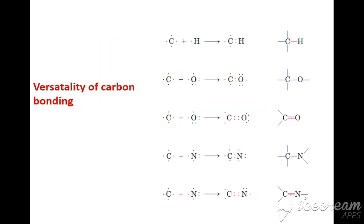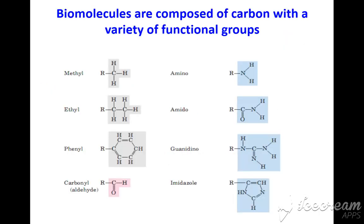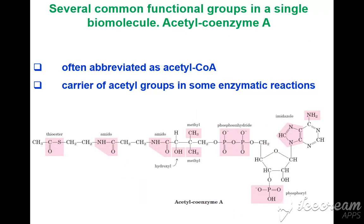Chemical foundation deals with chemical bonding. We can see the versatility of carbon bonding — carbon can make bonds with hydrogen, oxygen, and nitrogen, and carbon has the ability to make 4 bonds. Biomolecules are composed of carbon with a variety of functional groups. These are the different biomolecules having different functional groups. Acetyl-CoA is a key biomolecule having several functional groups, often abbreviated as Acetyl-CoA.